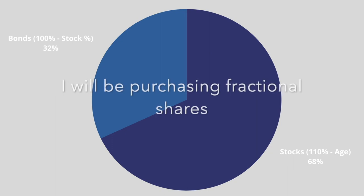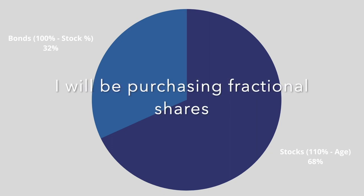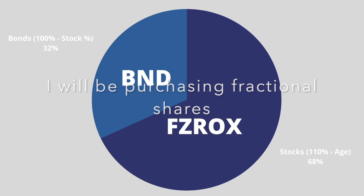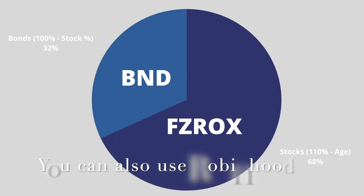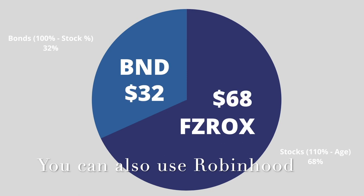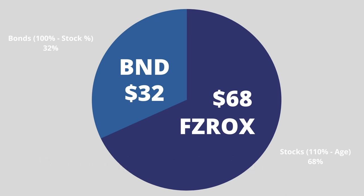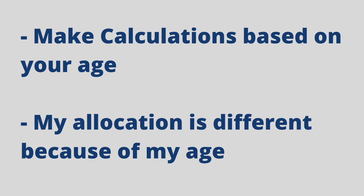As you can see from the chart, I am investing the majority of my $100 into stocks and the rest in bonds. For stocks, I'm going to use the ETF FZROX, and for bonds I'm going to use BND. FZROX is from Fidelity and BND is from Vanguard — I can hold both in my Fidelity account. So I'm going to invest $68 in FZROX and $32 in BND. The key takeaway from this formula is that you make calculations based on your age, so if you're 32 years old your stock allocation will be different from mine.